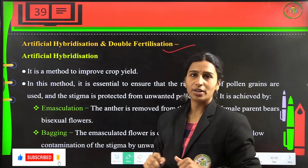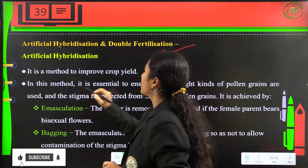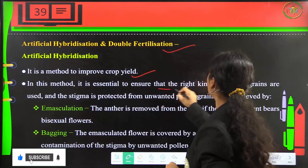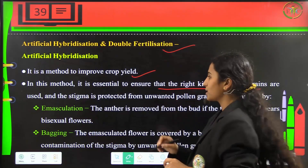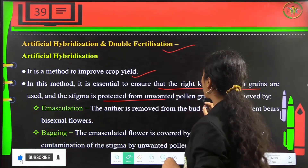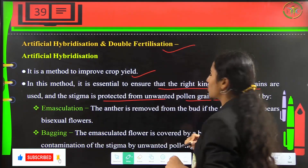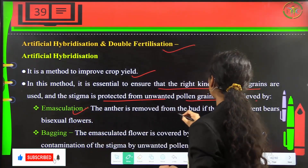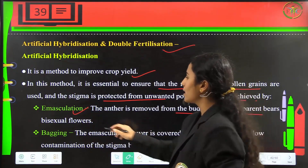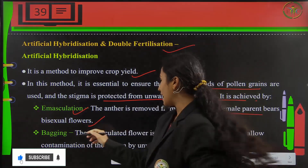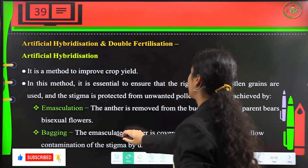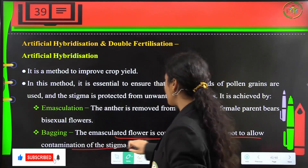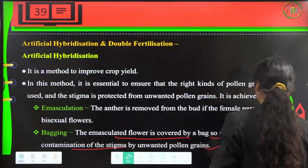Artificial hybridization is a method to improve crop yield. It is essential to ensure that the right kinds of pollen grains are used and the stigma is protected from unwanted pollens. This is achieved by emasculation, in which the anther is removed from the bud in the female parent bearing bisexual flowers, and by bagging, where the emasculated flower is covered with a bag to prevent contamination of the stigma by unwanted pollen grains.